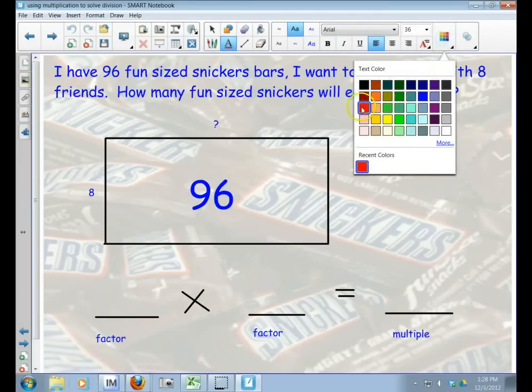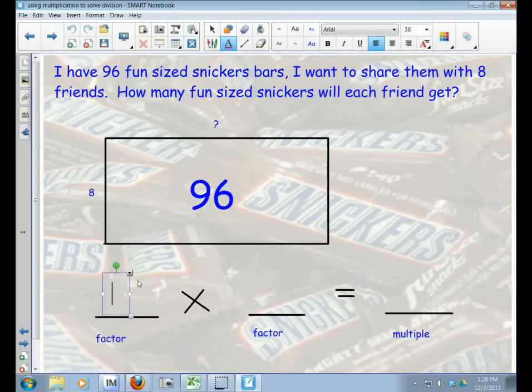I'm going to put it into a multiplication problem format to help us start thinking. So it's 8 times something we don't know yet, and it's going to equal 96. I've got a factor of 8 times another factor, which I don't know yet, that's going to give me the multiple of 96.